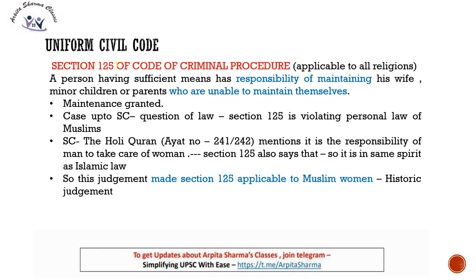Section 125 of the Code of Criminal Procedure is applicable to all religions. It states that a person having sufficient means has the responsibility of maintaining his wife, minor children, and parents who are unable to maintain themselves. Importantly, under Section 125, 'wife' includes divorced wives — so even after divorce, the husband's responsibility to maintain his wife continues.